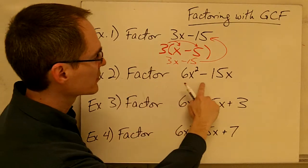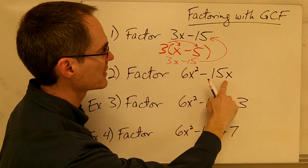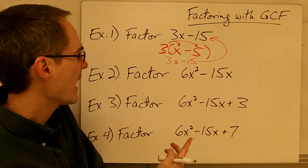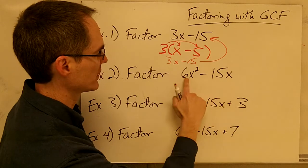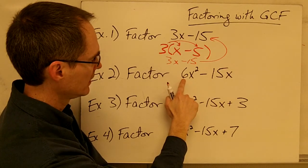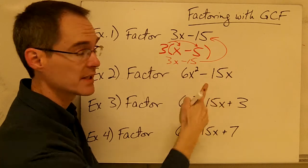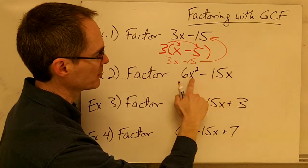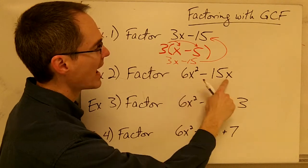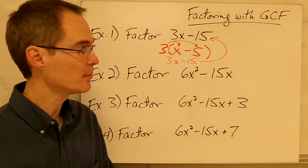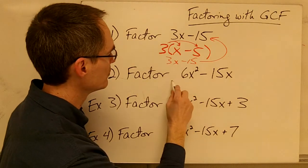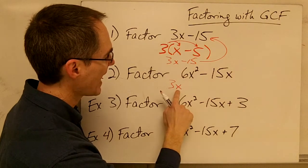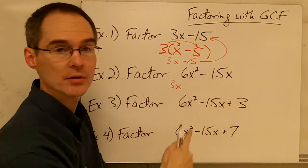Let's take a look at example 2: factor this expression, 6x squared minus 15x. Again, I want to look for a common factor in each of these two terms. If I just look at the coefficients — the number part — I can see that 3 will go into 6, and 3 will also go into 15. But I also notice I can pull out another factor, because this is an x squared term and this is an x term. I can pull out a factor of x from each term as well. So my greatest common factor is going to be 3x.